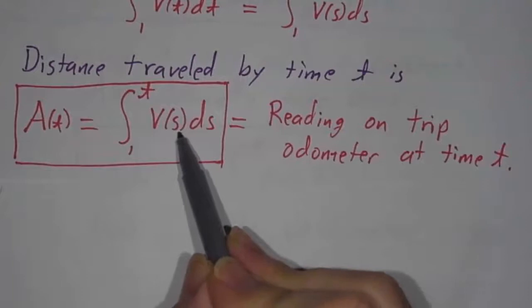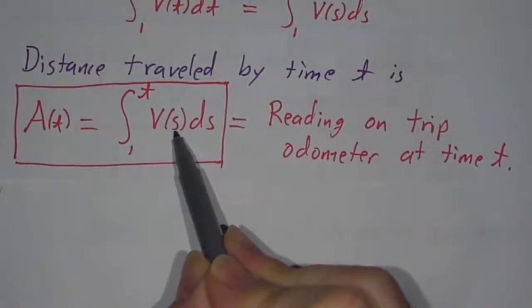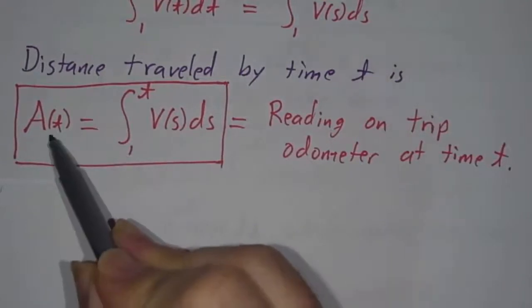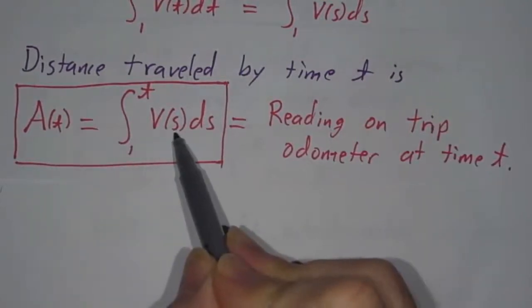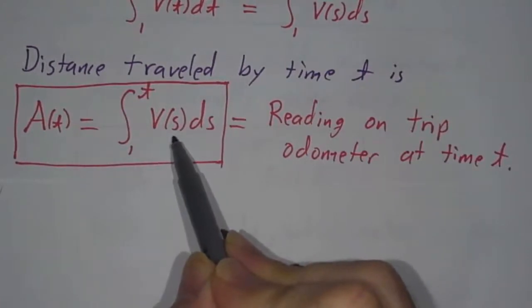Now, you notice I wrote v(s)ds and not v(t)dt. The reason is this makes sense: I'm adding up all the values of s from 1 to t. If I want to know what is A(4), I want all the values of s from 1 to 4. If I want A(7), I want to add up all the values of s from 1 to 7.